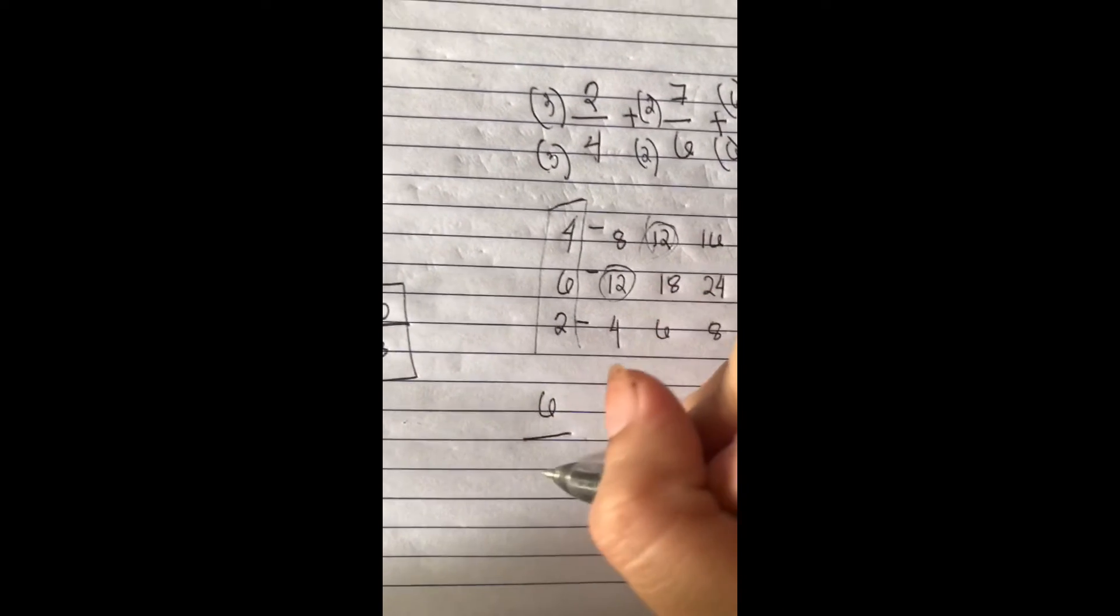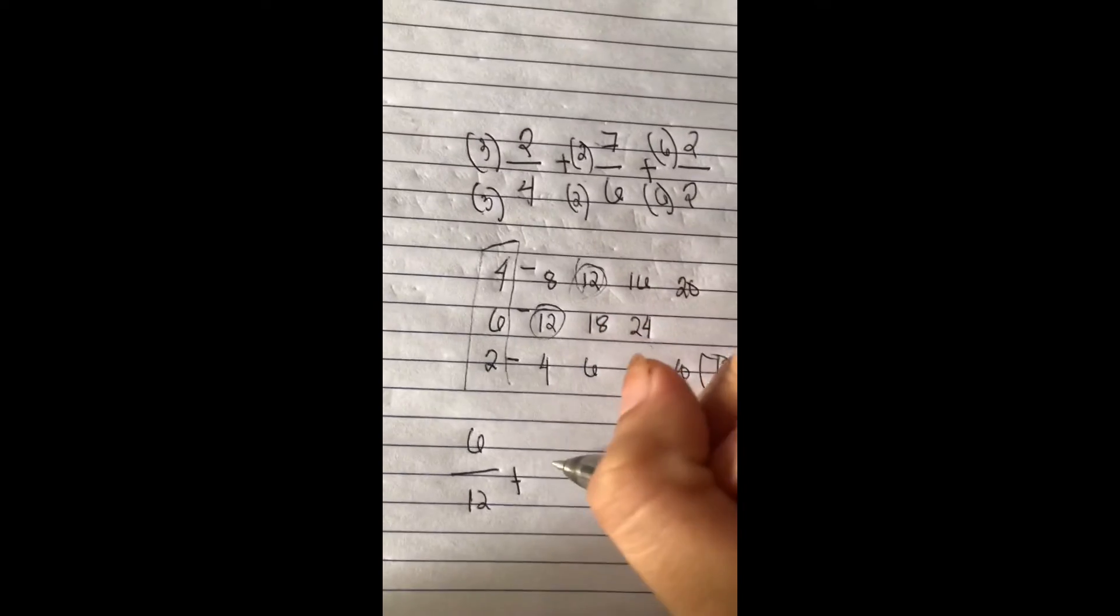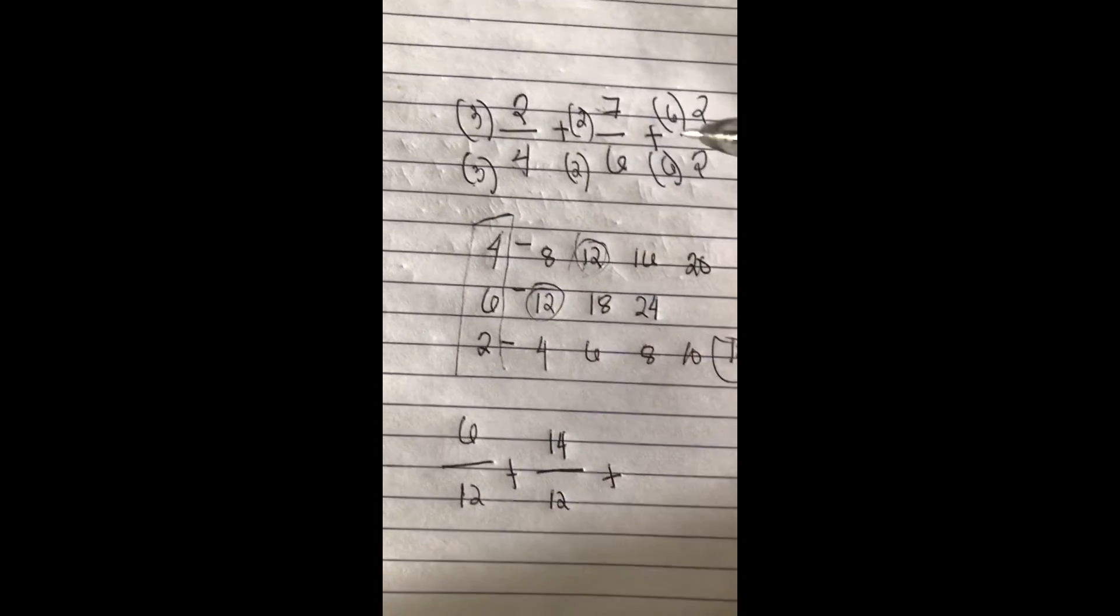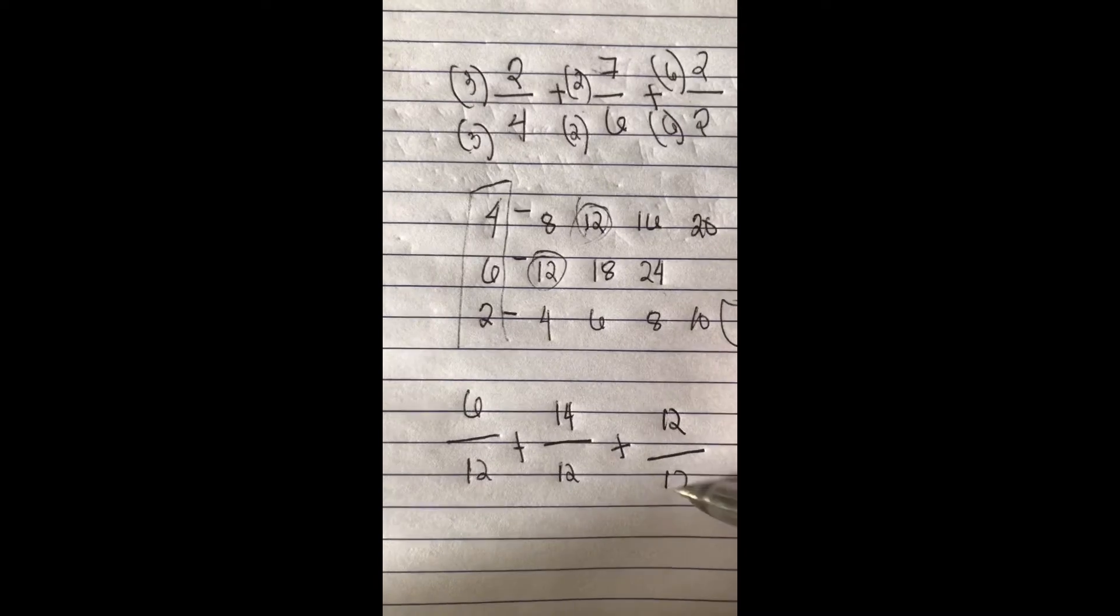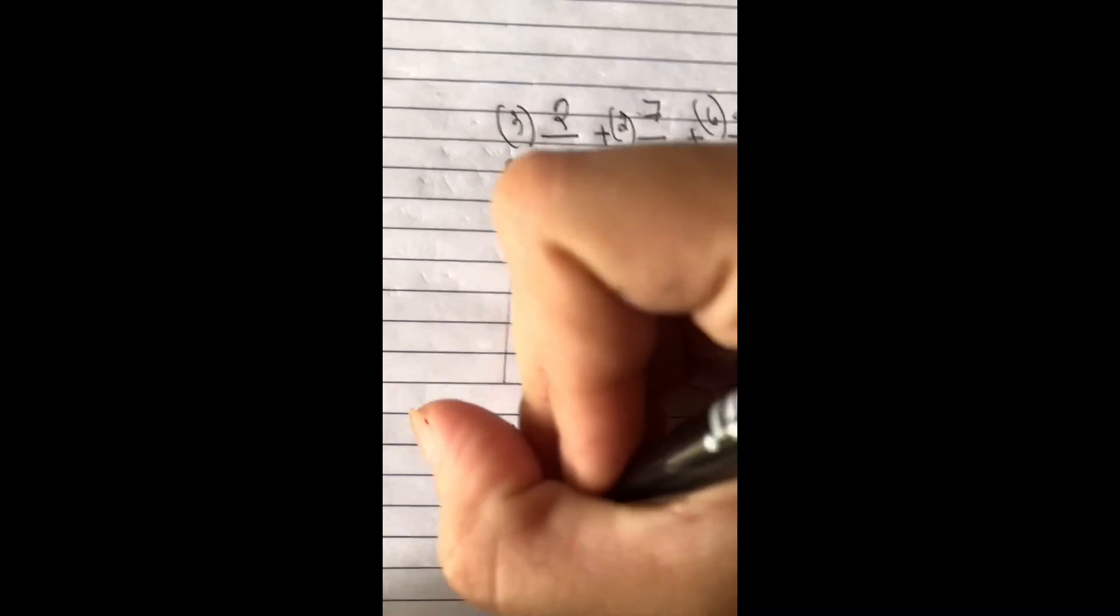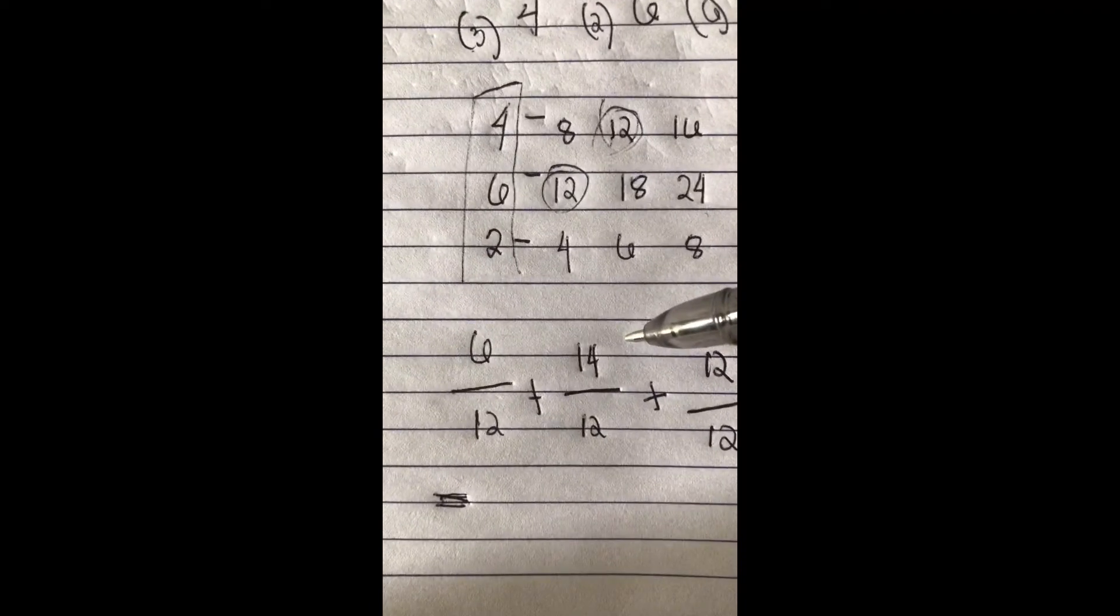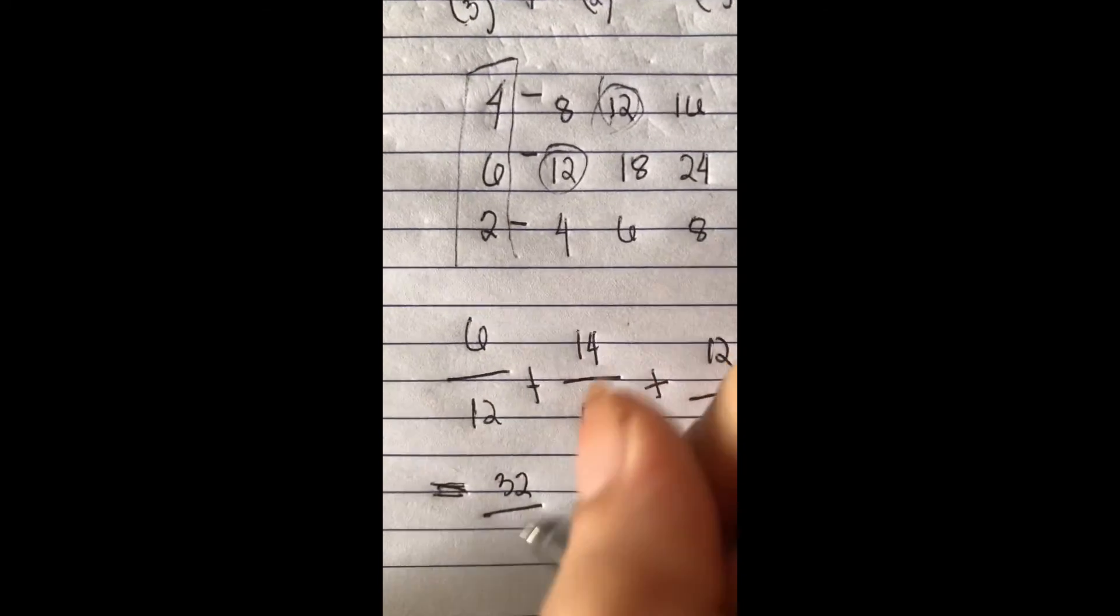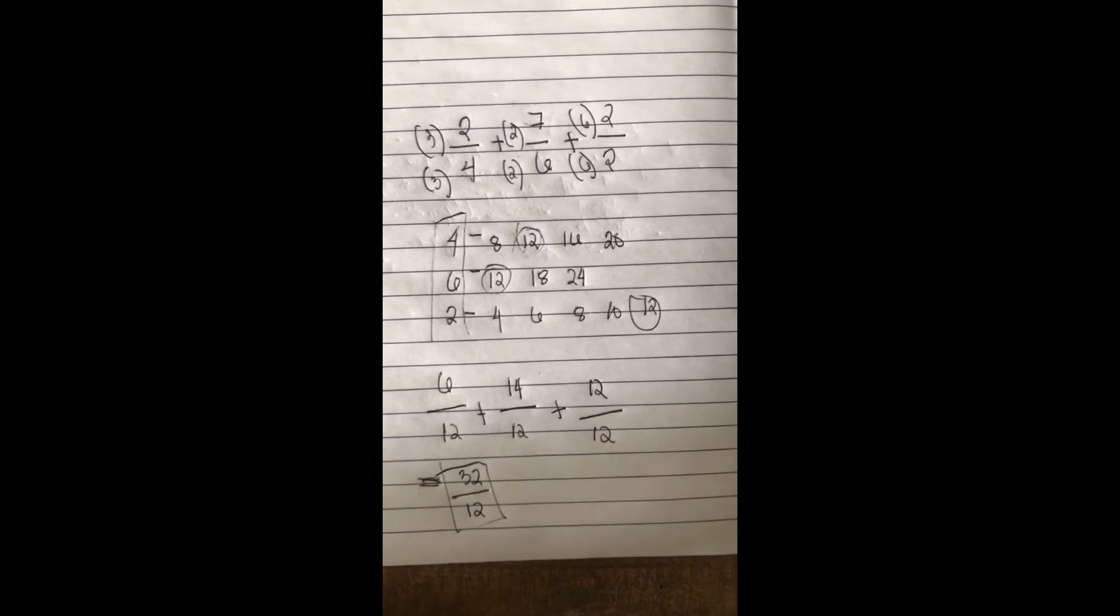So 3 times 2, that is 6. 2 times 7, that is 14, plus 6 times 2, that is 12. Now add the top numbers which is our numerator. So 6 plus 14, that is 20, plus 12, that is 32. Copy the denominator. So our final answer is 32 over 12. So that is the process of adding fractions.